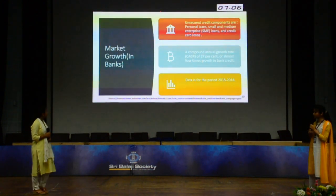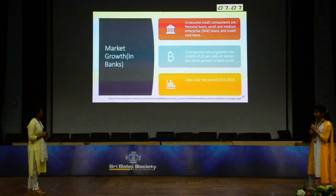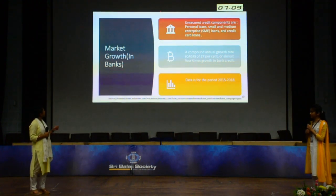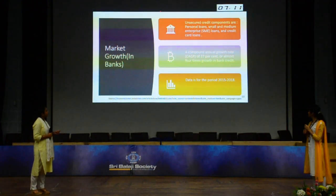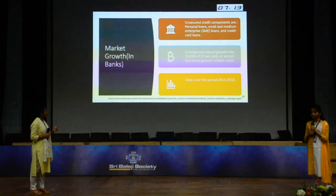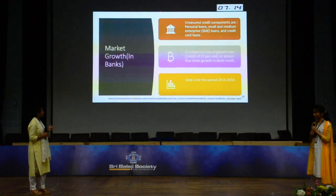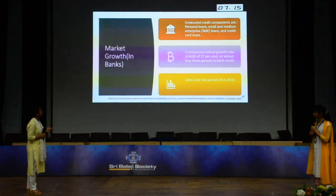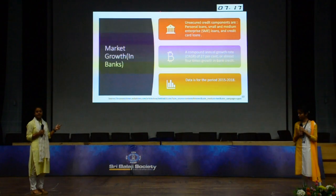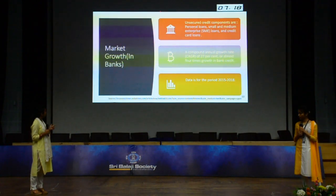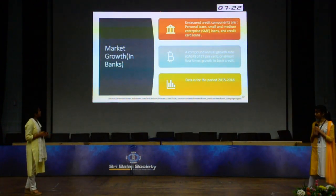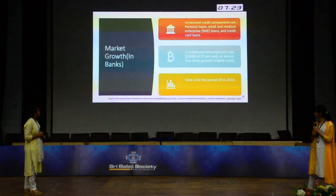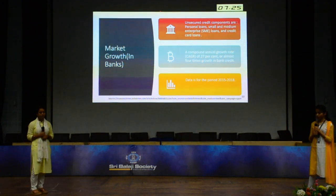Now we have the market growth of banks. The unsecured credit components are personal loans, small and medium enterprise loans, and credit card loans. These three are characterized as unsecured loans, and their compound annual growth rate is 27% — almost four times the rate of overall bank credit growth.